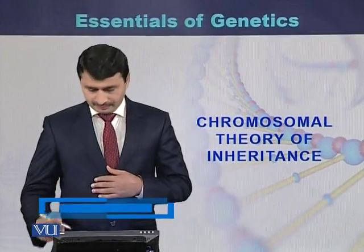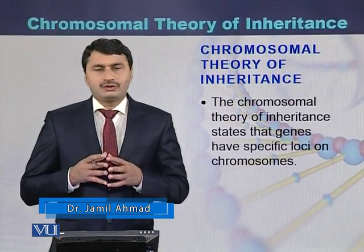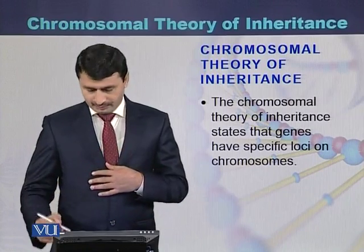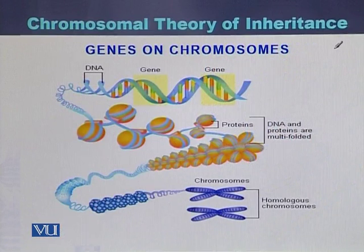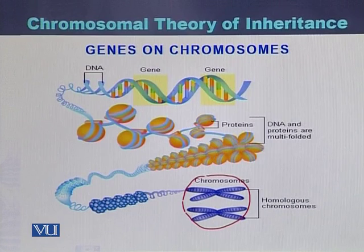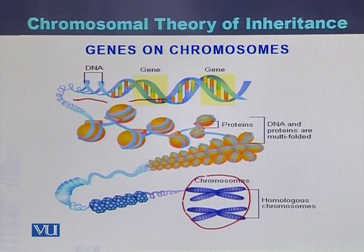The chromosomal theory of inheritance states that genes have specific loci on the chromosomes. As seen in the diagram, chromosomes are made up of nucleosomes as a result of nucleosome folding, super folding, and coiling. These nucleosomes are made up of DNA, and on the DNA is the sequence of genes. So we can say that genes are present on the DNA, or in other words, genes are present on the chromosomes.